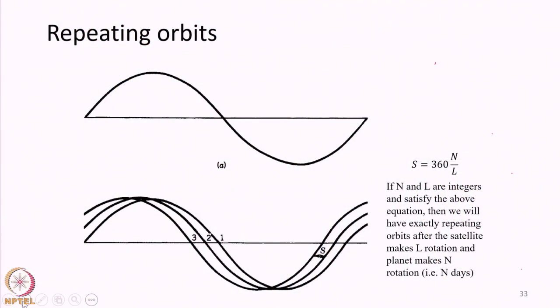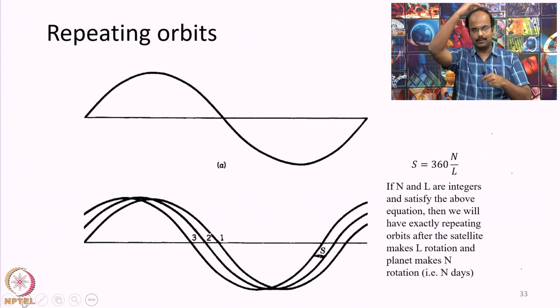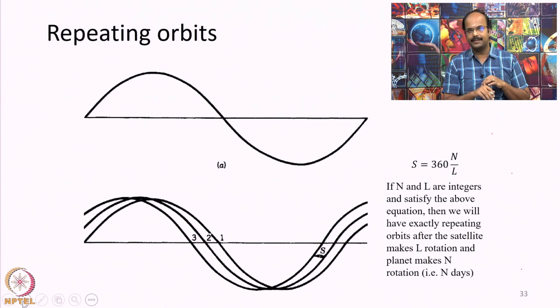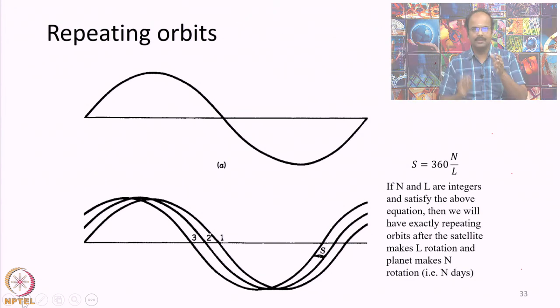We also started discussing about the repeating nature of the orbital cycle. After every given number of days, the ground track at which the satellite overpasses will repeat — say, every 16 days or every 24 days — in order to produce global coverage with high spatial resolution.